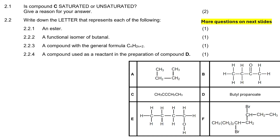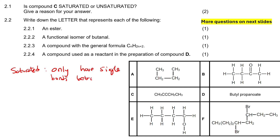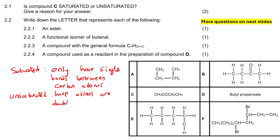Question 2.1 — they give us a whole bunch of molecules. It says: is compound C saturated or unsaturated? Give a reason for your answer. Saturated molecules only have single bonds between carbon atoms, whereas unsaturated molecules have at least one double or triple bond between carbon atoms.